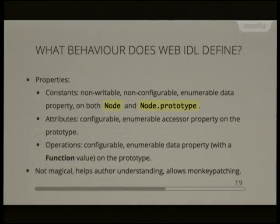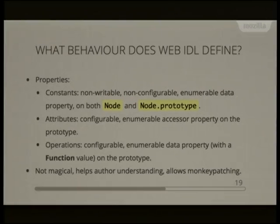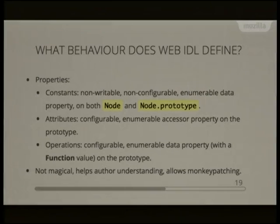More generally, Web IDL defines what properties, constants, attributes, and operations correspond to and where they live — whether on the prototype or the object itself — and what their property attributes are, such as whether they're writable or configurable. By defining these things in terms of actual language features, the behaviour is not magical and helps author understanding. An IDL attribute corresponds to an accessor property with a getter and setter, and you can use the standard JavaScript getOwnPropertyDescriptor to extract and replace those if you want, enabling monkey-patching for library shims.